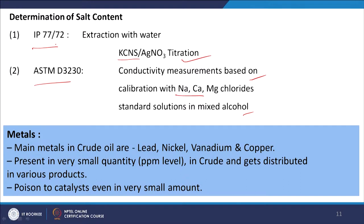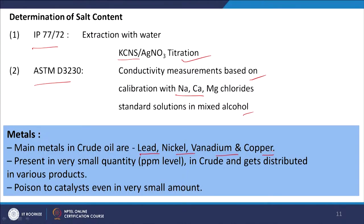Metals available in crude oils are mainly lead, nickel, vanadium, and copper. These contribute to ash — when burned, soot and particulates are formed — and they poison the catalyst. So the lesser the metals, the better the quality of the crude or of the derived product.